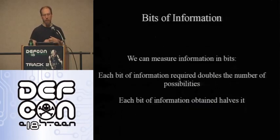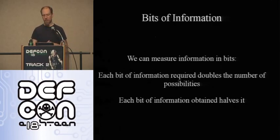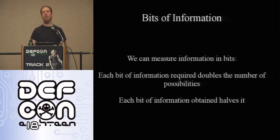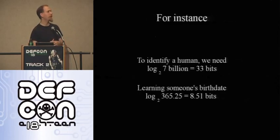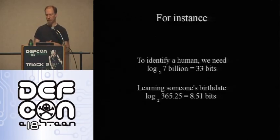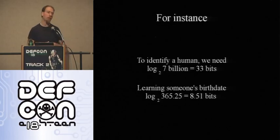There's a mathematical measure for how identifying a set of facts about a person is, or how much information is required to identify someone. Each bit doubles the number of possibilities you need, and each bit you learn halves the number of possibilities. On Earth with seven billion people, you need about 33 bits to identify one person. If you learn someone's birth date — what day of the year they were born — you learn about 8.51 bits.